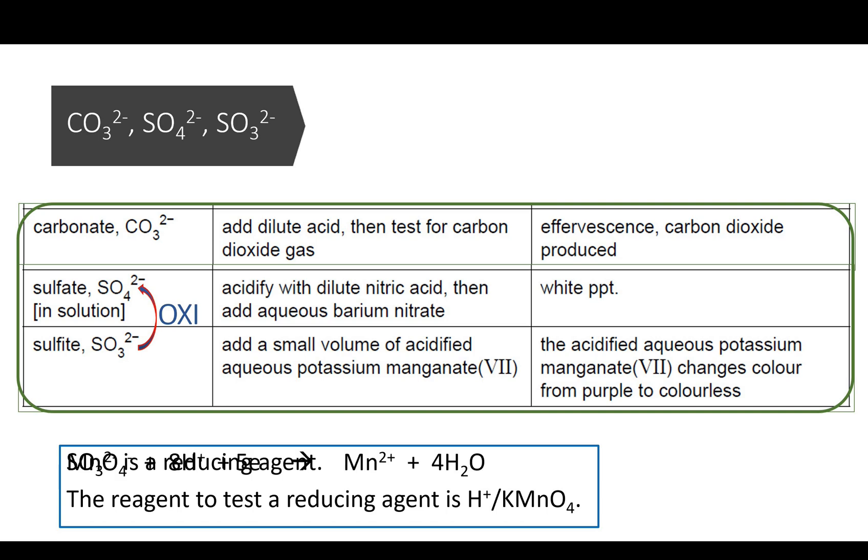Manganese with oxidation state of plus 7 is purple, whereas plus 2 is colorless. This test also gives a positive result for other reducing agents, such as nitrite, which gets oxidized to nitrate upon the addition of acidified potassium manganate 7.